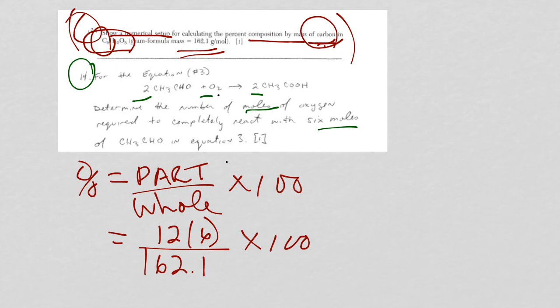So in this case, it says determine the number of moles of oxygen. So what I like to do is put the X above what I'm looking for, required to completely react with 6 moles of the CH3CHO. So this is 6 here.